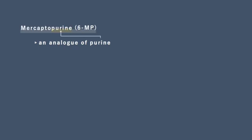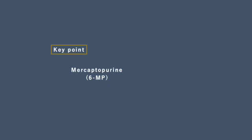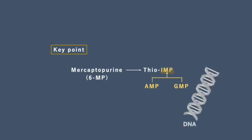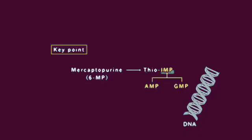Mercaptopurine pretends to be purine and interferes with purine metabolism. The key point is that mercaptopurine is metabolized into IMP. IMP serves as a precursor for AMP and GMP, contributing to DNA synthesis. This pathway is where mercaptopurine exerts its action.